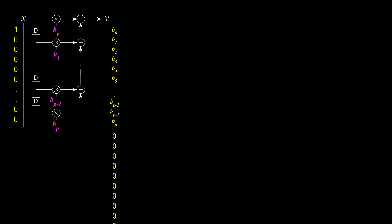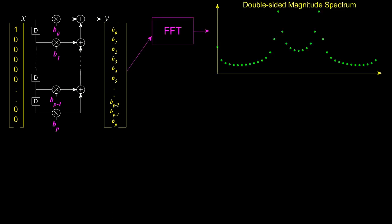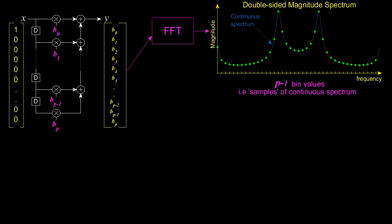In practice we'll take the FFT of enough samples of the impulse response to get adequate frequency resolution. In this case I just used the non-zero values of the impulse response but it has to be noted that these green data points are just a finite number of frequency bin values which are essentially samples of the continuous frequency spectrum.